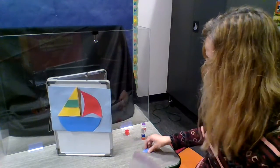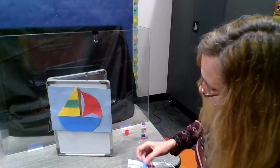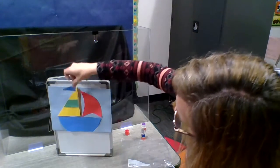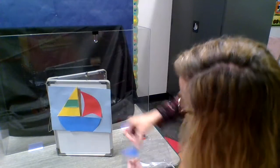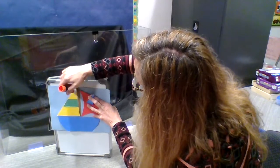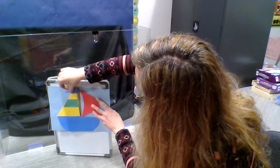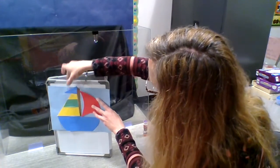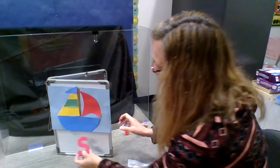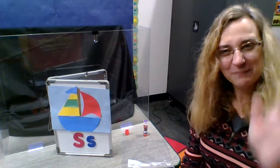And the last thing we need is our little blue flag. It's another triangle. It looks like this. And that one is going to go just like this right here. And there we go. There is our sailboat. S is for sailboat. Thanks for joining me. Bye now.